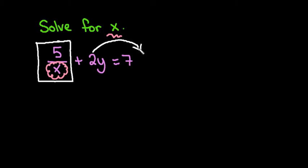So I want to move the 2y to the opposite side. Remember that any time you have addition or subtraction when it changes sides it's going to change signs. So the opposite of adding 2y is subtracting 2y. So I have 5 over x equals 7 minus 2y.